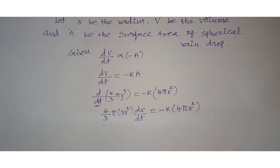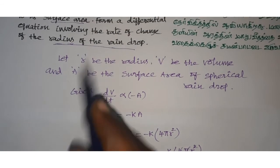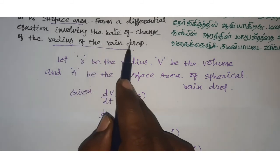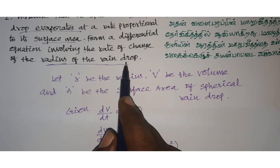Canceling values: 3 cancels with 3, and 4πr² cancels. Finally, we get dr/dt equals minus k. So this is the required differential equation involving the rate of change of the radius.